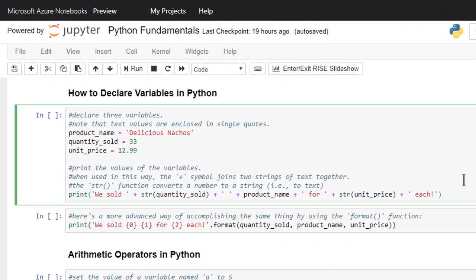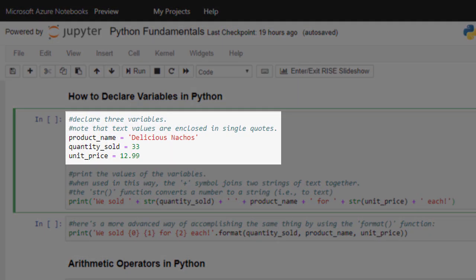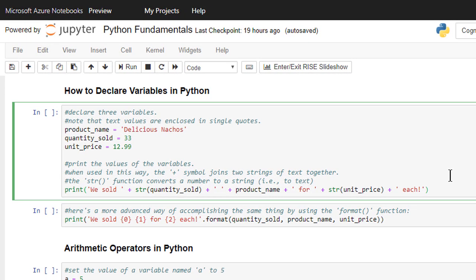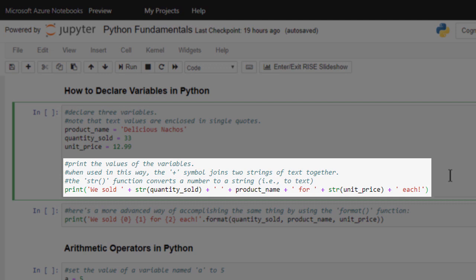Let's see a demonstration of variables being declared and used in Python. In the first part of this code cell, we declare three variables. The first variable is called ProductName, and its value is set to Delicious Nachos. The next variable is QuantitySold, with a value of 33. And the third variable is UnitPrice, with a value of 12.99. Again, note that text values are enclosed in single quotes. The next part of this code cell prints the values of the variables to the screen.